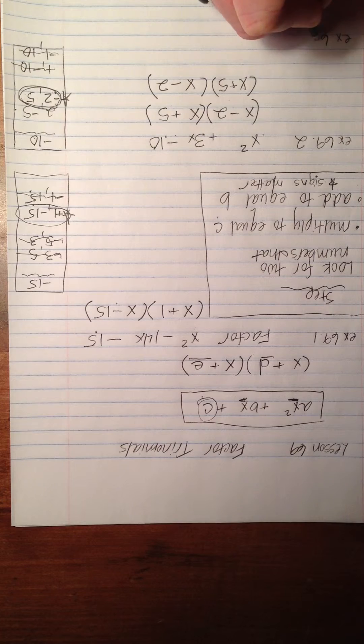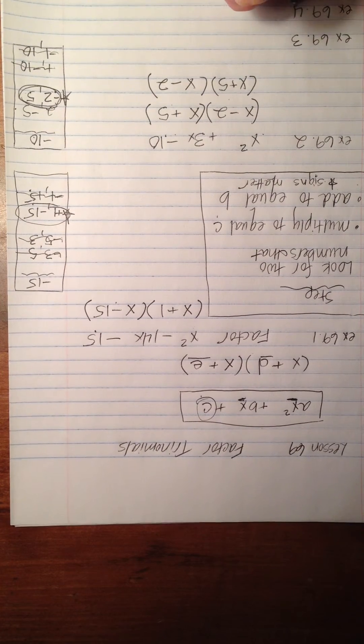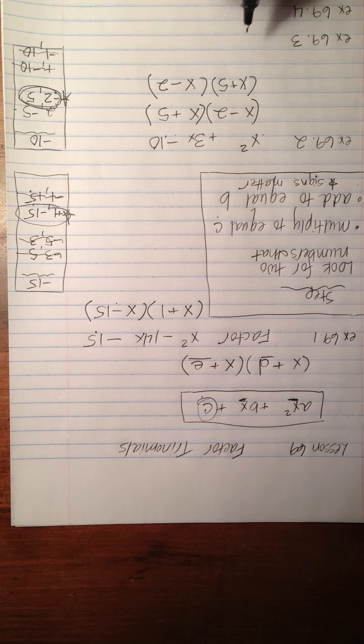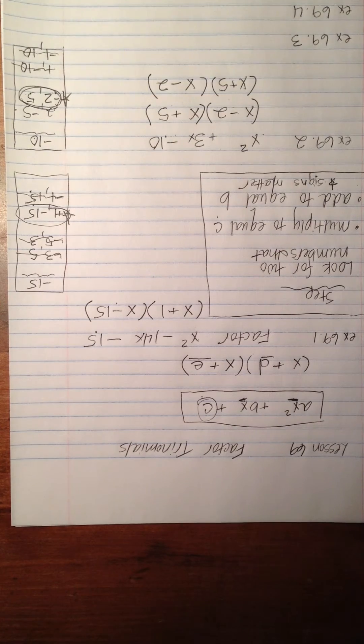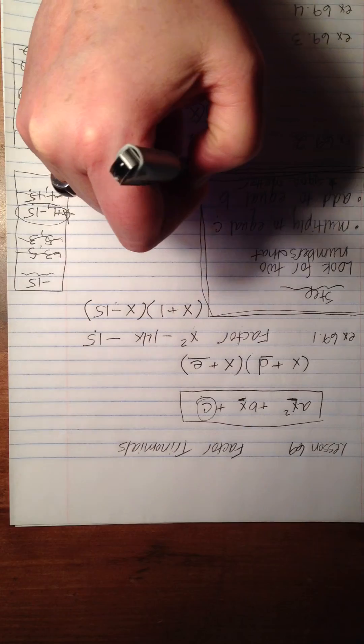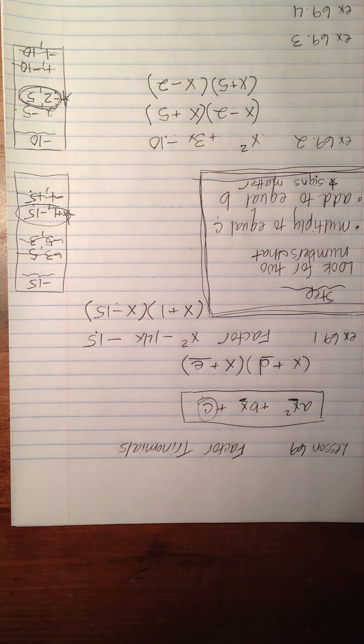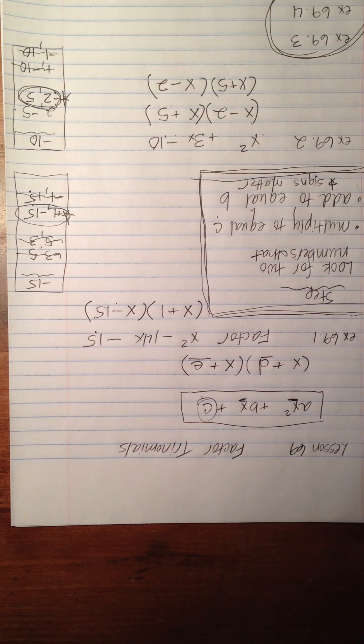I want you guys to go ahead and try example 69.3 and example 69.4. Again, just make your little chart and carefully look through these and find the pair of numbers that satisfies this requirement, and then you just write them in. We're going to be doing this, you guys, like I said, for many, many lessons to come. So it might seem kind of confusing now, but trust me, before long you will be thinking these are actually kind of cute and fun. Go ahead and work the examples right now, and good luck to you.